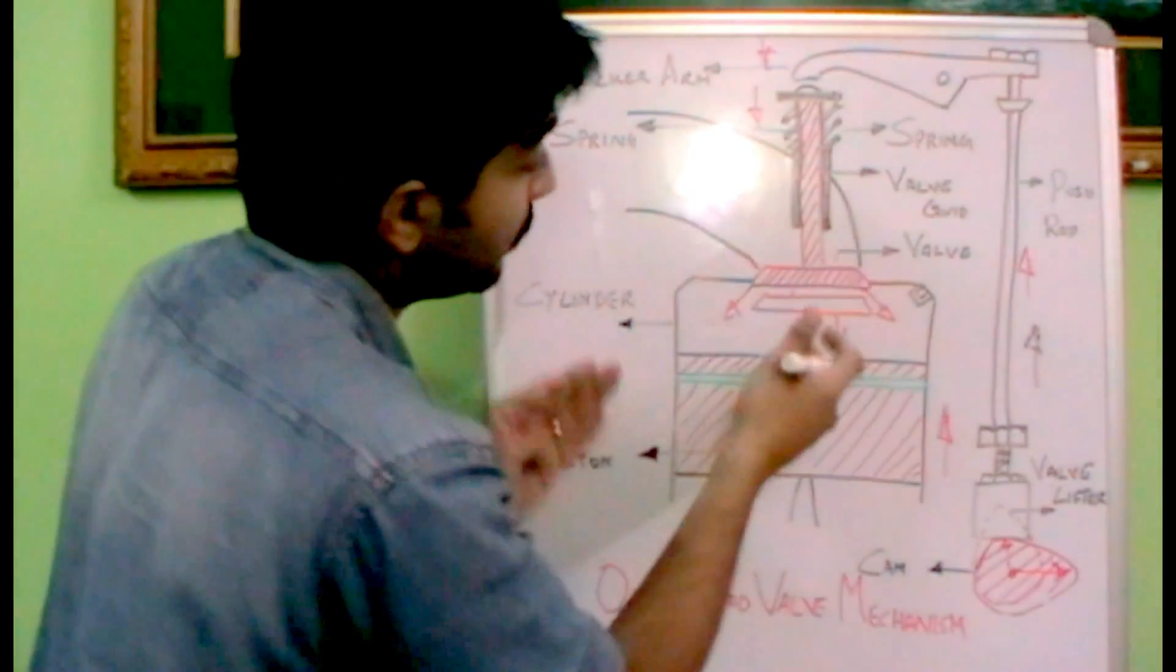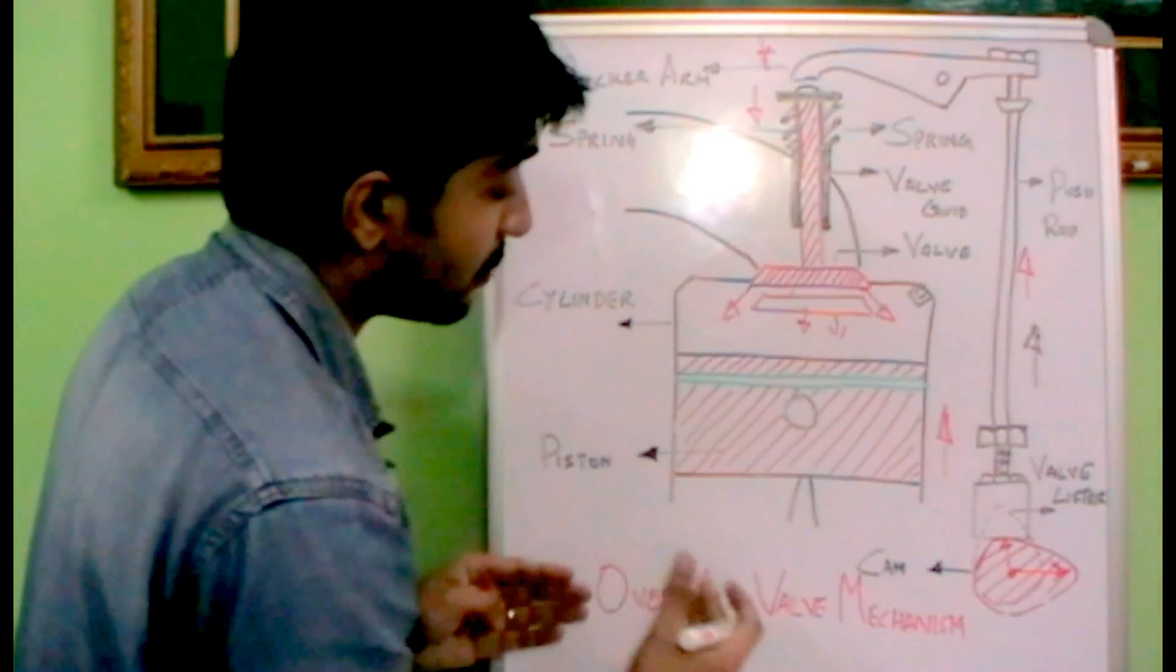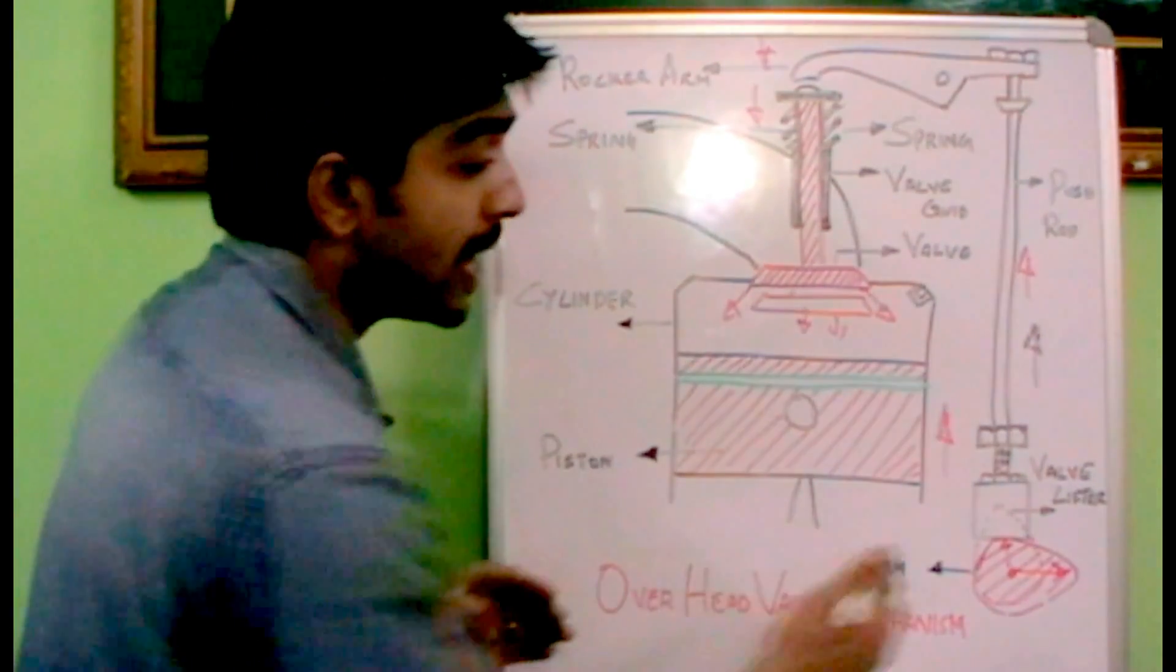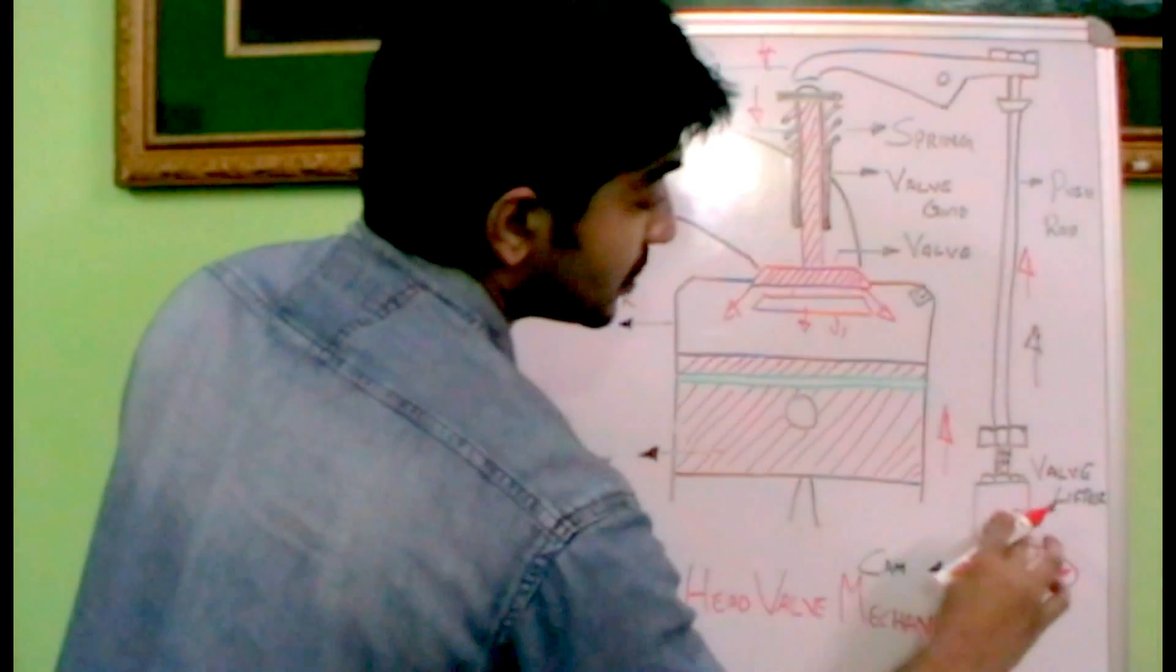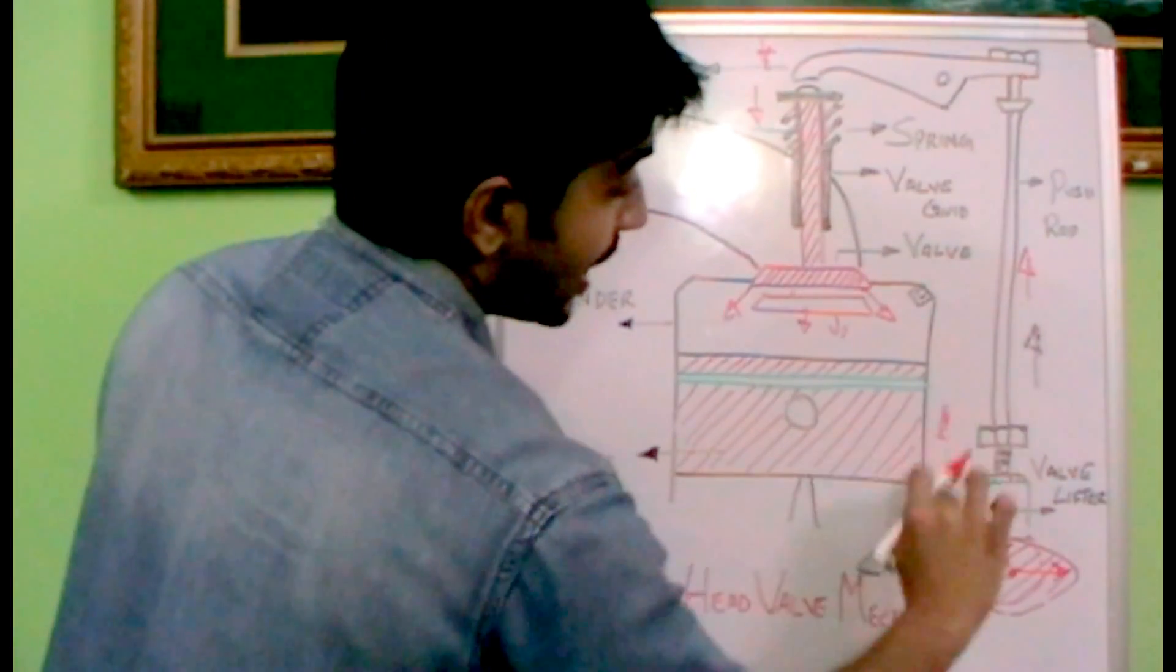That's how this mechanism works. So the valve will move down and it results in the fuel to come inside. So that's how an overhead valve mechanism is working. And when the cam returns back to its normal position, say like this, what happens?